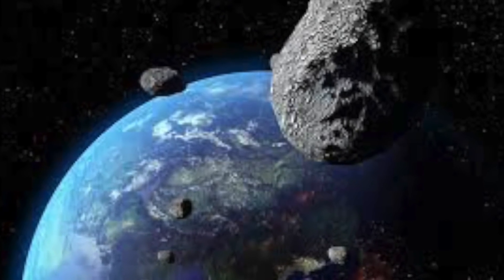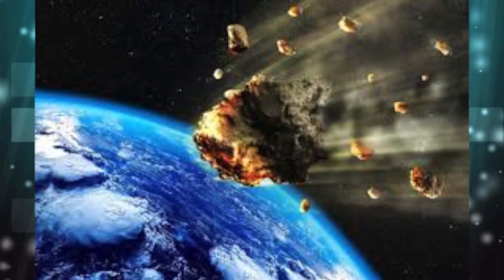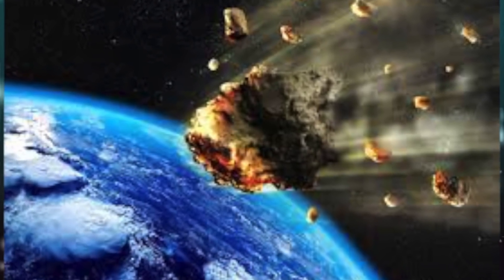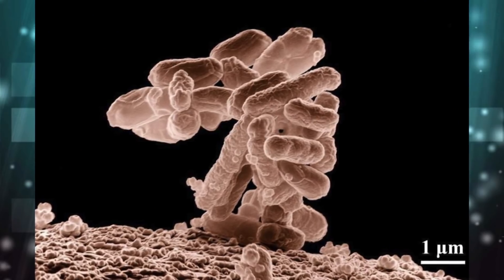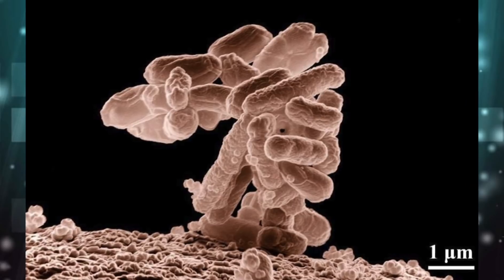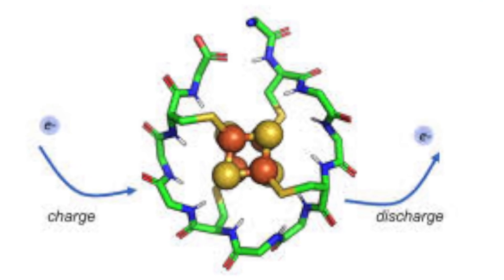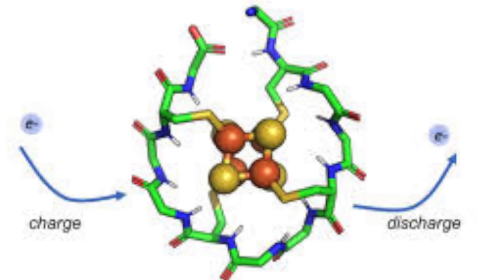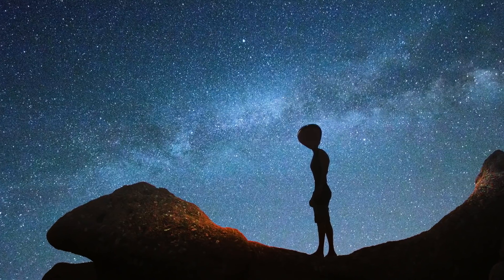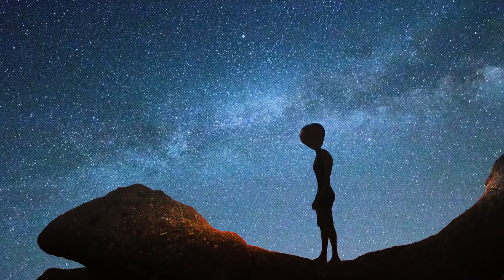The hot lava and the turbulent atmosphere created an environment where elements could combine to form compounds. This finally led to continuous thunder and showers that lasted for centuries. Low areas were filled with water. Meanwhile, ultraviolet radiations brought a number of changes.